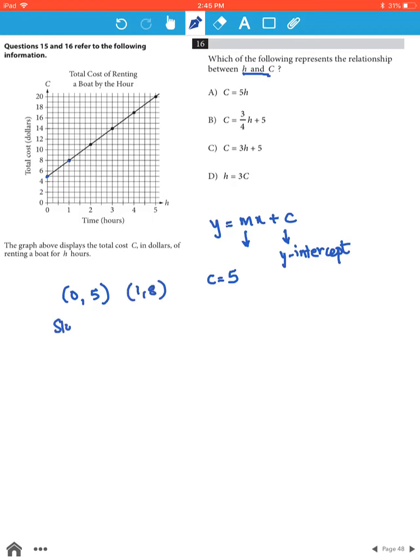Therefore the slope of the line is going to be equal to y2 minus y1 over x2 minus x1, which is equal to 8 minus 5 over 1 minus 0, which is equal to 3.